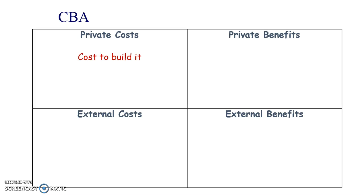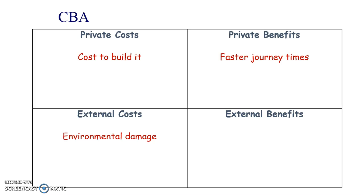In terms of doing a cost-benefit analysis, we look at the private costs — the cost to build it. It's going to be a public sector project, so it's going to cost the government money to build it, but it might also be funded under a private finance initiative with some private sector involvement. The private benefits would be to the company that gets the franchise agreement to run on it — they get revenue from customers — and the customer gets a faster journey time, about half an hour quicker from Birmingham to London. However, there will be some external costs: environmental damage, disruption during construction, people having to move, and destruction of homes and natural habitats.